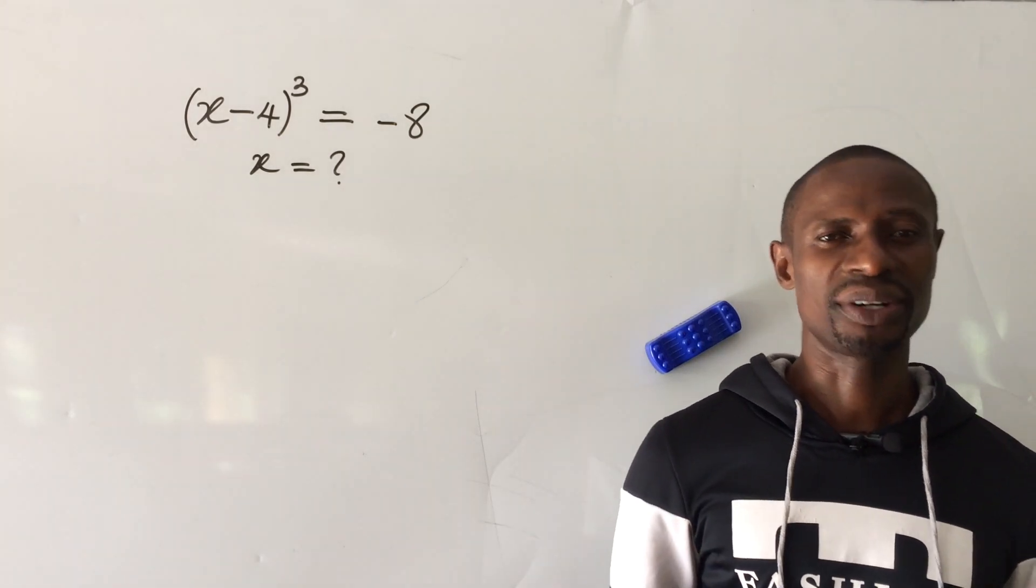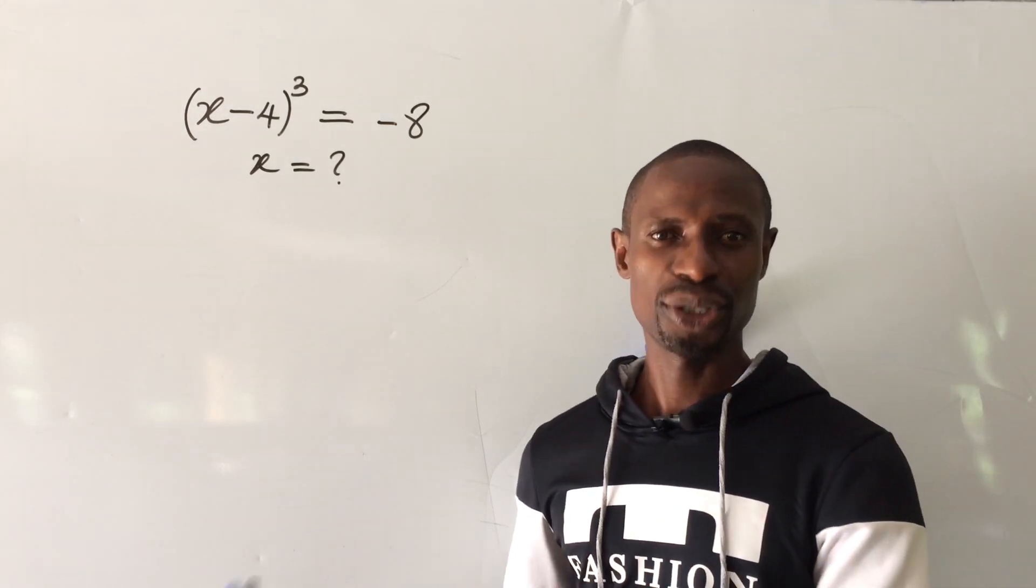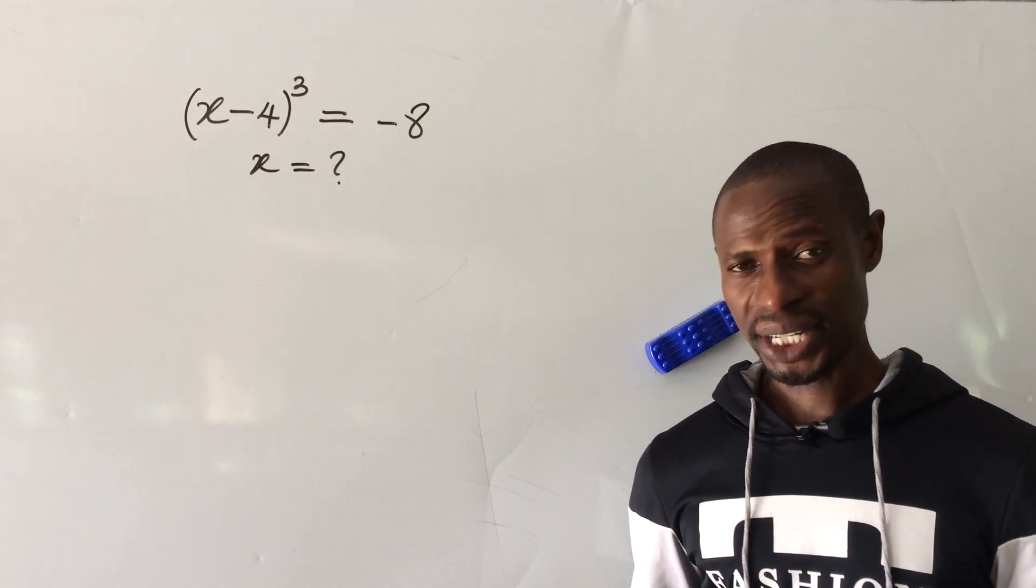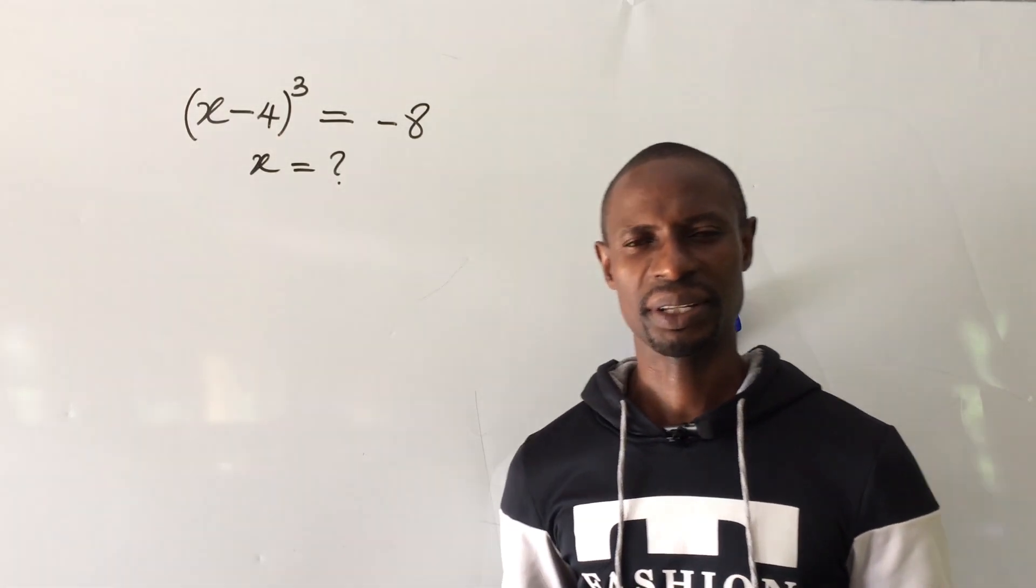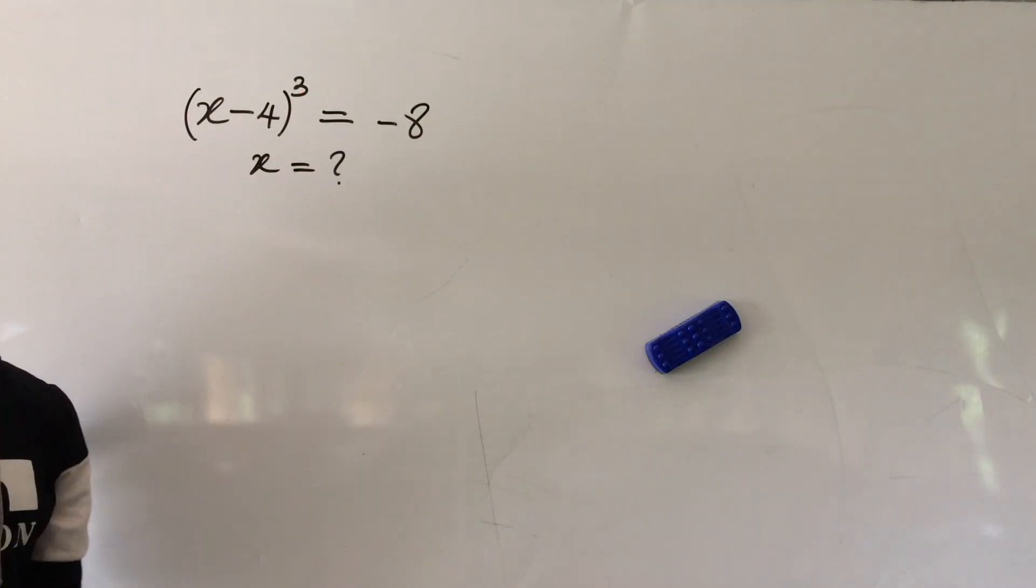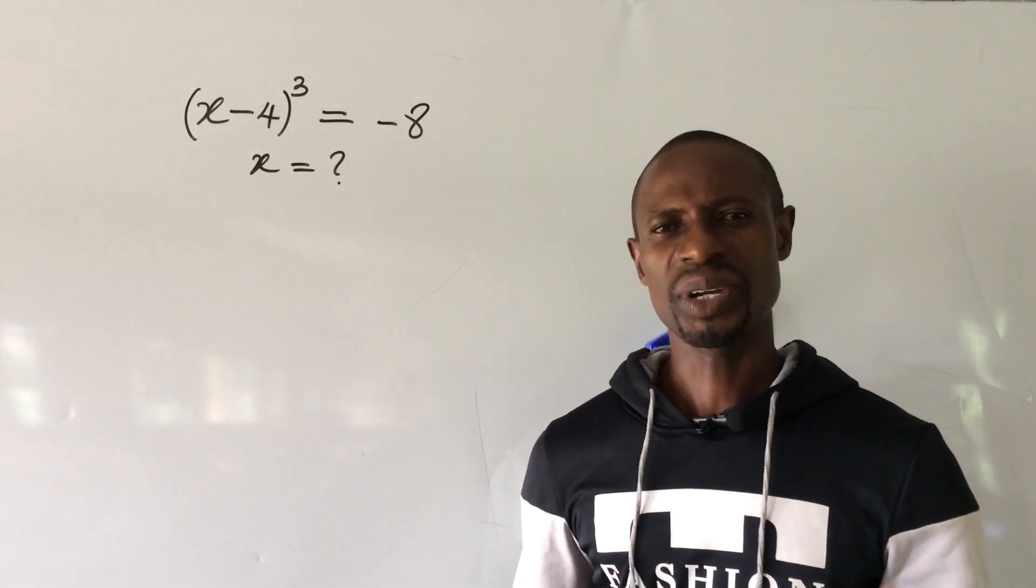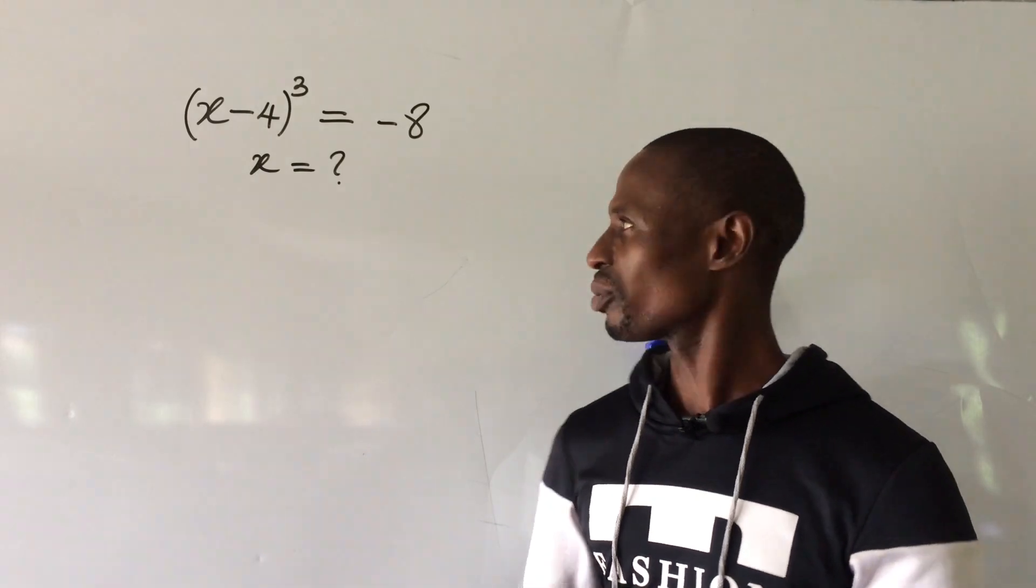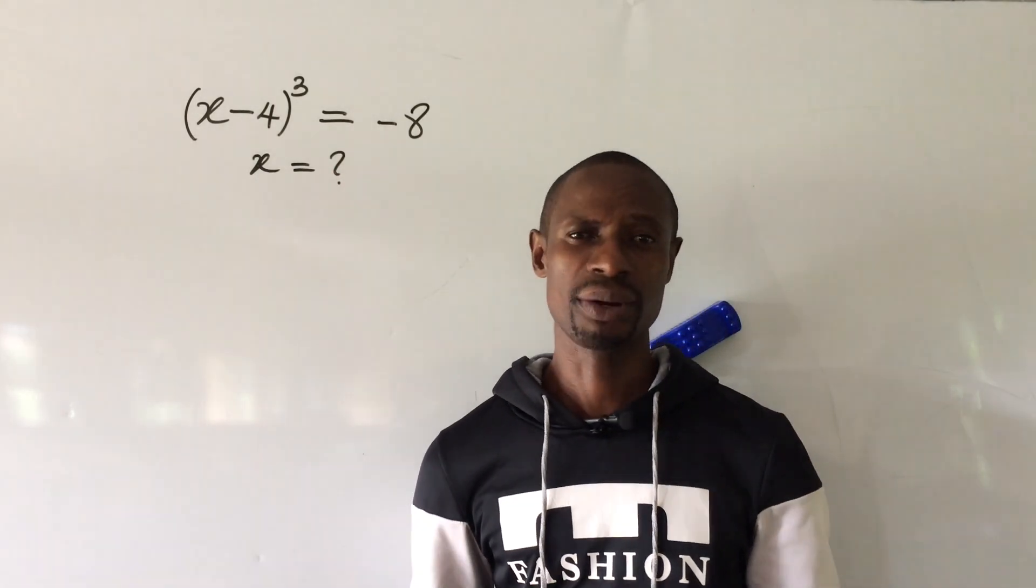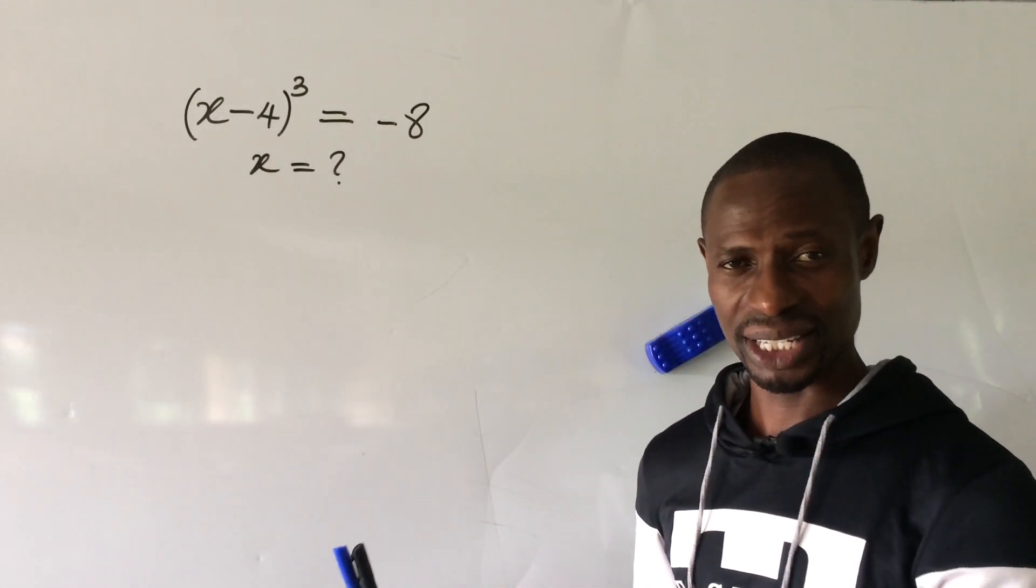By trial and error method, we can get the first root to this challenge, which is plus 2. So if you put plus 2 into that equation, it will satisfy the equation. But mainly looking at the equation, you have here raised to power 3. So what does that mean? It means we have to look for 3 possible values of x. So we can only use trial by error method to get only one of the roots. So how do we get the 2 other roots? Are they going to be a real root or imaginary root? That is the reason why I brought out this question.